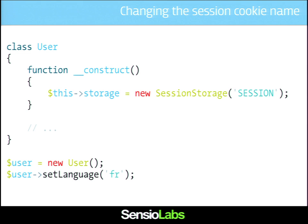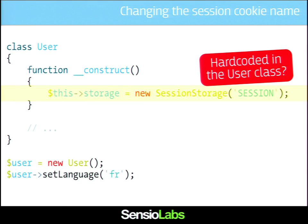The first thing I want to do is change the session cookie name. Remember, a session storage class takes a session name as a first argument. So instead of using the default one, I want to name it 'session'. Can you see the problem? It's very hard to customize from outside the user class. If I want to configure the session name from the outside — storing the name in a variable outside the user object — that's not possible. Everything is hardcoded into the user class. That's not really flexible enough.